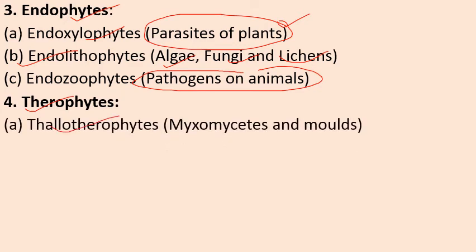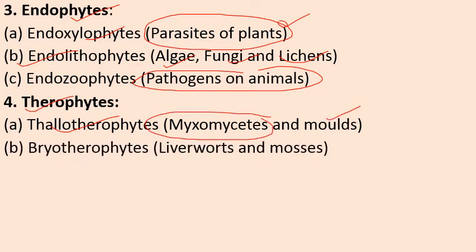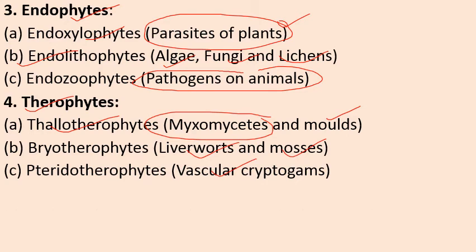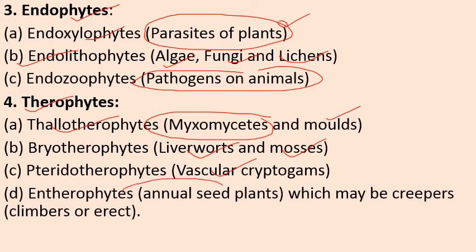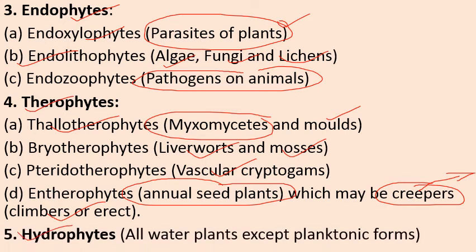In Braun-Blanquet's classification, Therophytes are further divided into: Thallotherophytes (includes fungi members like myxomycetes and molds), Bryotherophytes (includes bryophytes like liverworts and mosses), Pteriodotherophytes (includes vascular cryptogams — pteridophytes), and Antherophytes (annual seed plants, which may be creepers growing horizontally on the soil surface, or climbers that climb on supporting structures like walls or trees using tendrils). Hydrophytes are plants growing in water bodies, excluding planktonic forms.